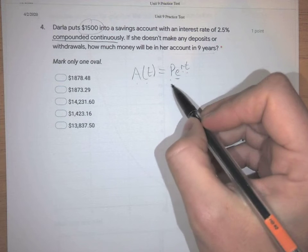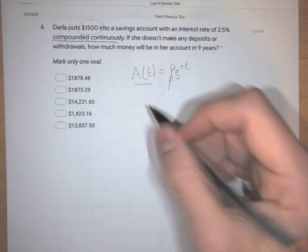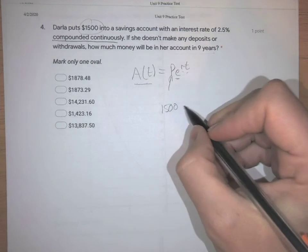So in this problem, we're given the principal, and we want to find the final amount here. P, the principal, is $1,500. That's the starting amount that she put into her savings account.